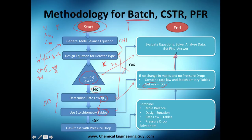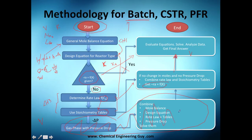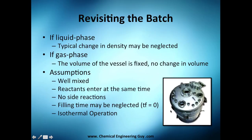If there's no change in moles and no pressure drop, we can directly combine the rate law and stoichiometry tables to solve for volume. We're not going to cover pressure drops for the batch reactor, because normally we don't have them — the volume is constant and the gas is not flowing. So just ignore that part.